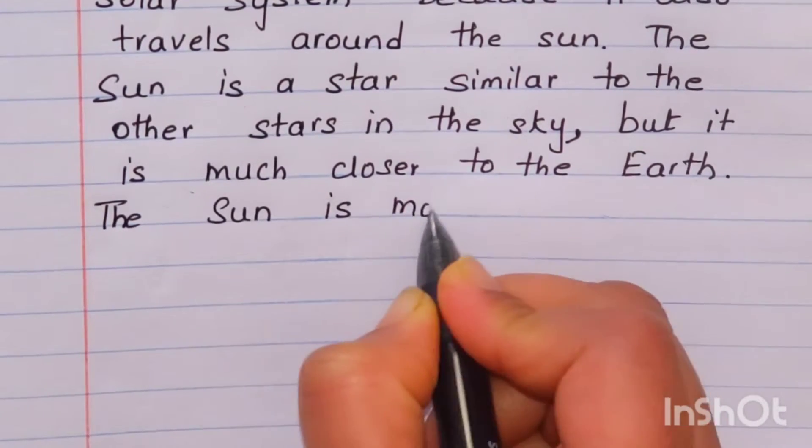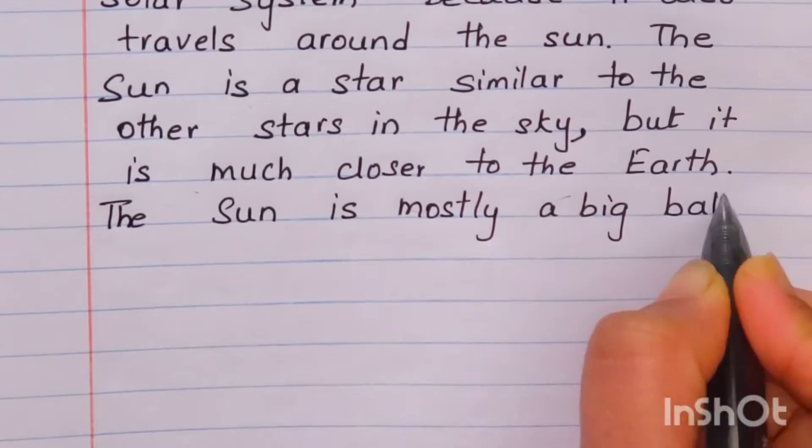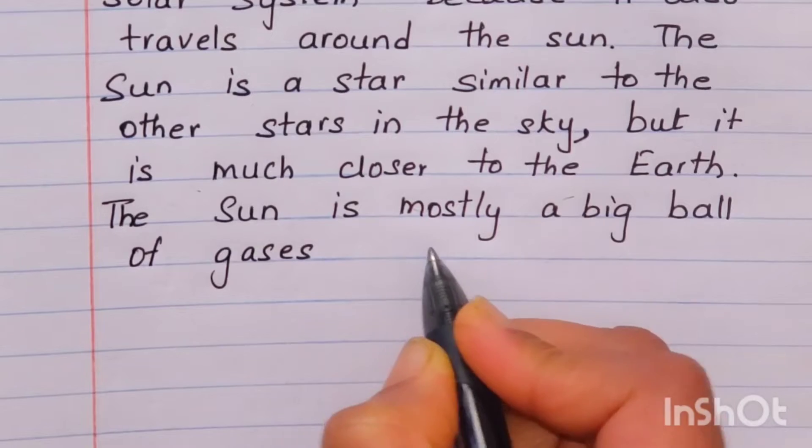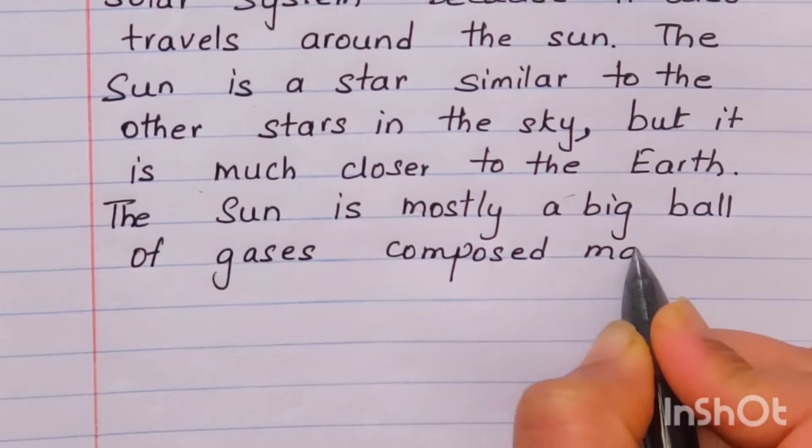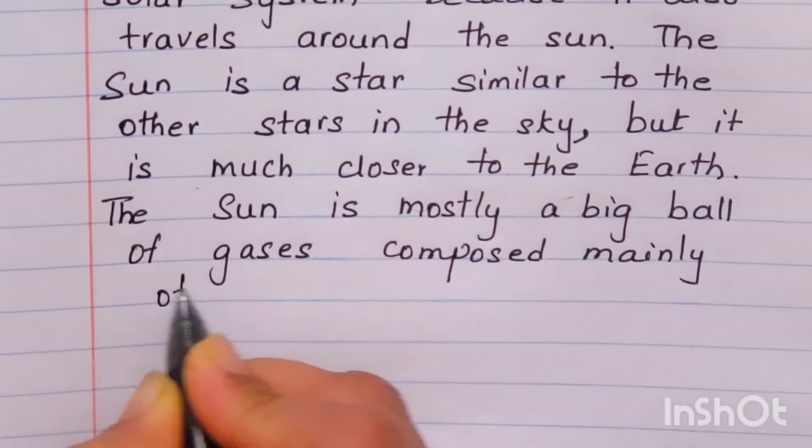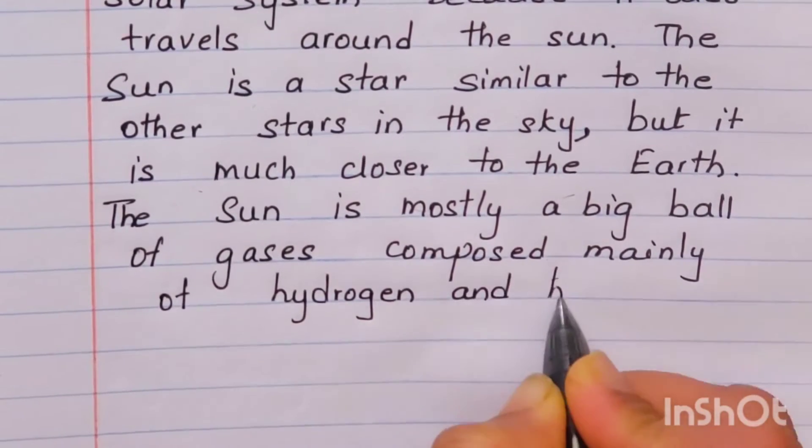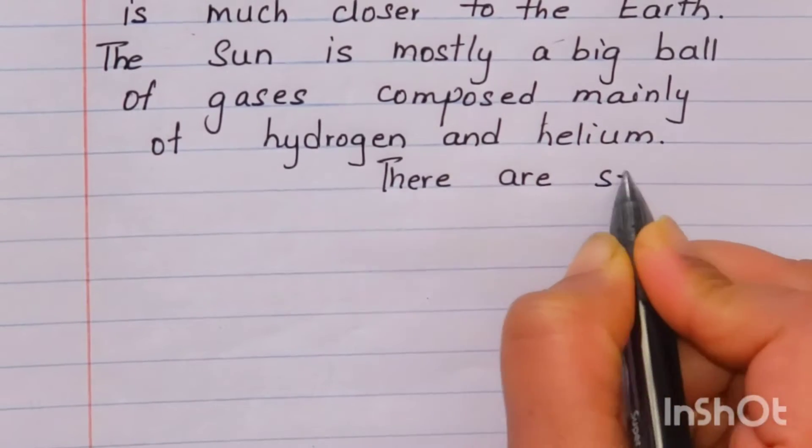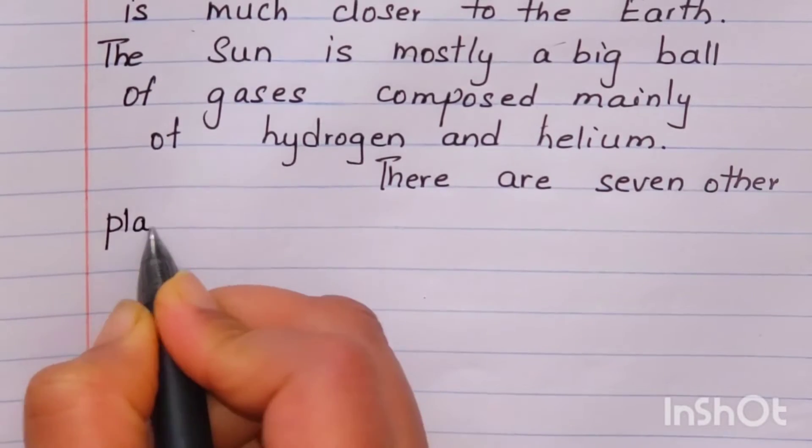The sun is mostly a big ball of gases composed mainly of hydrogen and helium.